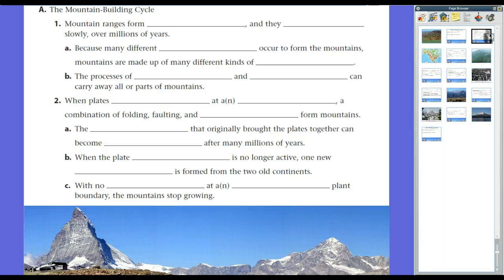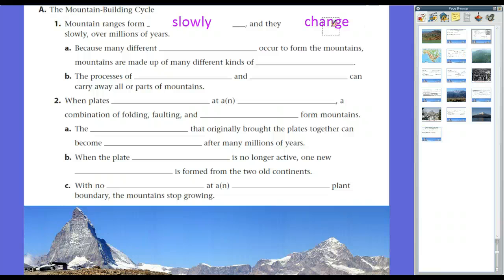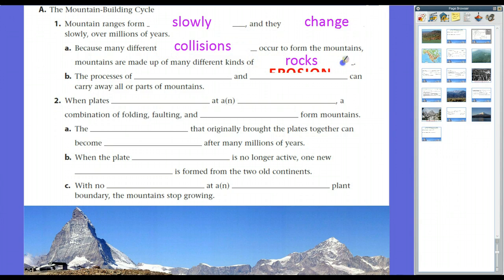The mountain building cycle — how do mountains form, and how do mountains collapse? Mountain ranges form slowly, and they change slowly over millions of years. Plates colliding together will form mountains. Because many different types of collisions occur to form mountains, mountains are made of very different types of rocks — sedimentary, igneous, and metamorphic. No matter what type of rock is there, mountains are made out of them.